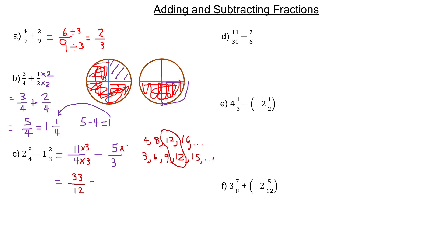This one we're multiplying by four to make the denominator 12. Five times four is 20, and three times four is 12. Now since the denominators are the same, we can subtract.